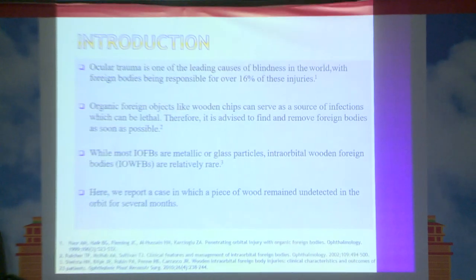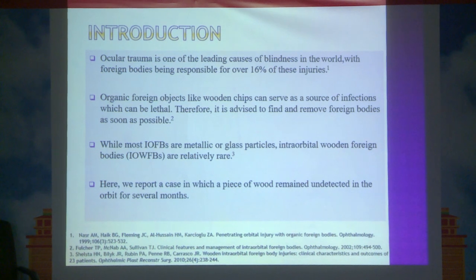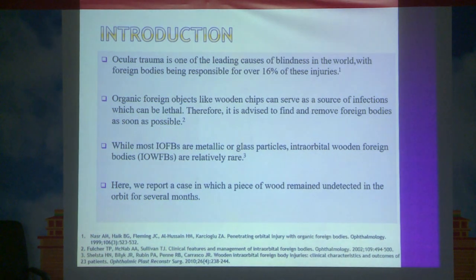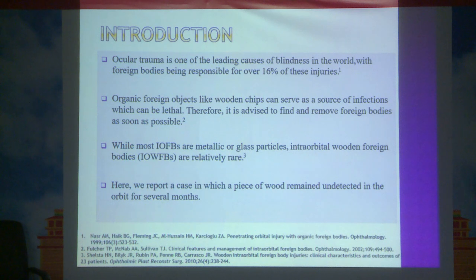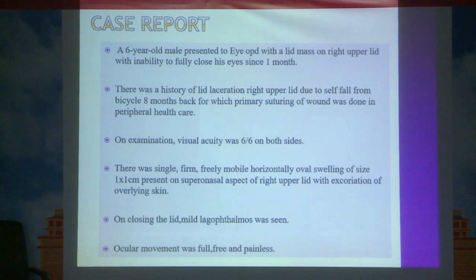A six-year-old male presented to our OPD with a lid mass on the right upper lid with inability to fully close his eyes since one month. There was a history of lid laceration of the right upper lid due to a fall from a bicycle eight months back, for which primary repair was done at a peripheral health care center. On examination, visual acuity was 6/6 bilaterally. There was a single, firm, freely mobile, horizontally oval swelling of approximately 1 by 1 cm on the superonasal aspect of the right upper lid with excoriation of overlying skin. On closing the lid, mild lagophthalmos was seen; ocular movements were full, free and painless.